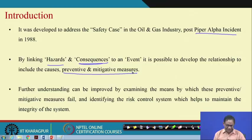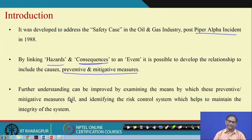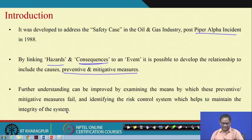Further understanding can be improved by examining the means by which the preventive and mitigating measures fail. What I mean is: you have preventive and mitigating measures, but they can fail — how will they fail? That means identifying a risk control system which helps to maintain the integrity of the system. By integrity we mean mechanical integrity and operational integrity. This is essentially the use of bow tie.